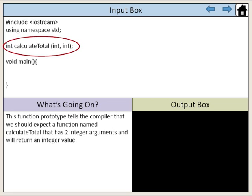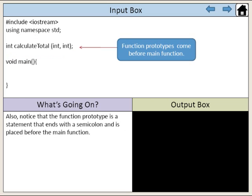This function prototype tells the compiler that we should expect a function named calculateTotal that has two integer arguments and will return an integer value. Also notice that the function prototype is a statement that ends with a semicolon and is placed before the main function.